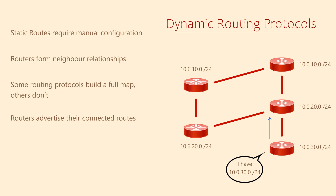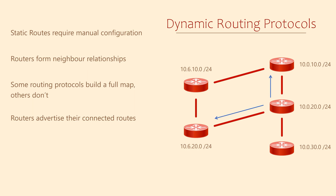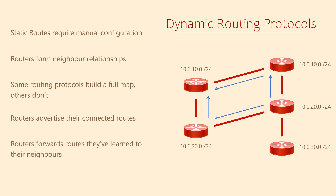If this is the best route, the router installs it in the routing table. When a router learns a route, it will share it with other routers it knows about. Each of these will store the route in memory and advertise it to their neighbours.